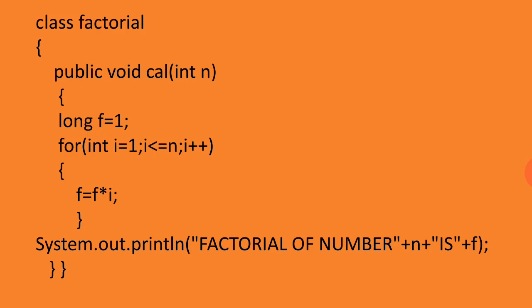Which will calculate the factorial of number n. So public void cal int n, curly brace open, long f equal to 1. Then for loop: int i equal to 1, i less than equal to n, i++. That means I'm moving from 1 to n. Every time it is increased by 1. So keep in mind: 1×2×3×4 up to n. So there will be f equal to f times i.